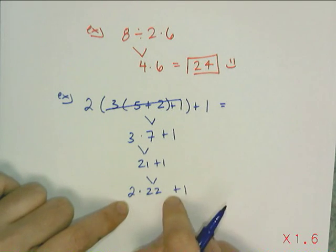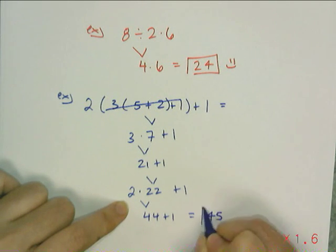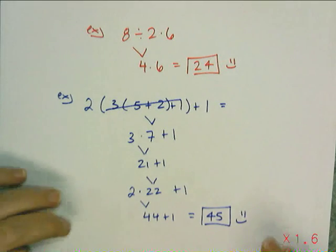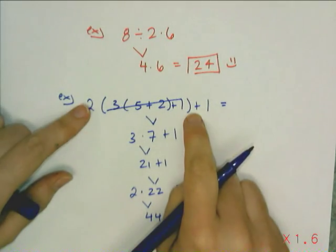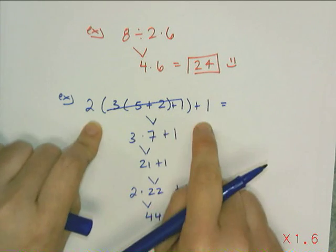And then I'm going to add the 1 at the very end. So multiplication is more important. 2 times 22 is 44. Plus 1, 45. Box it off. Happy face. Now, this problem is not too bad. You just have to find where to start and then work your way out.